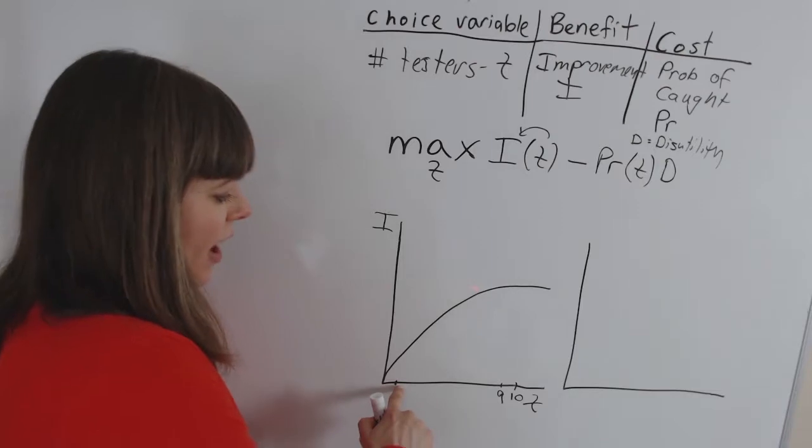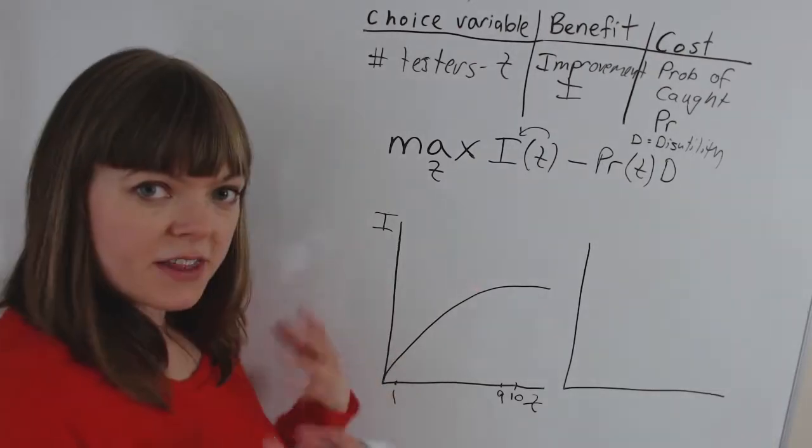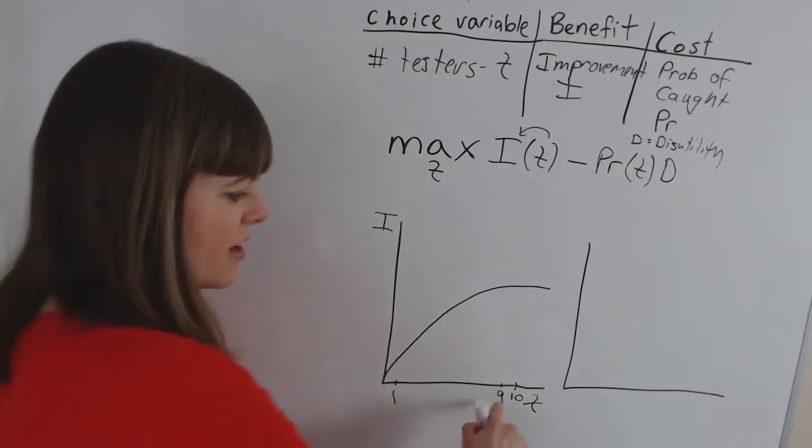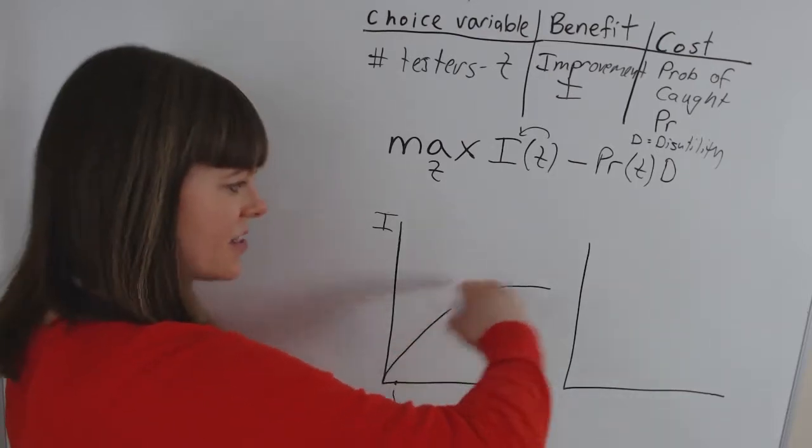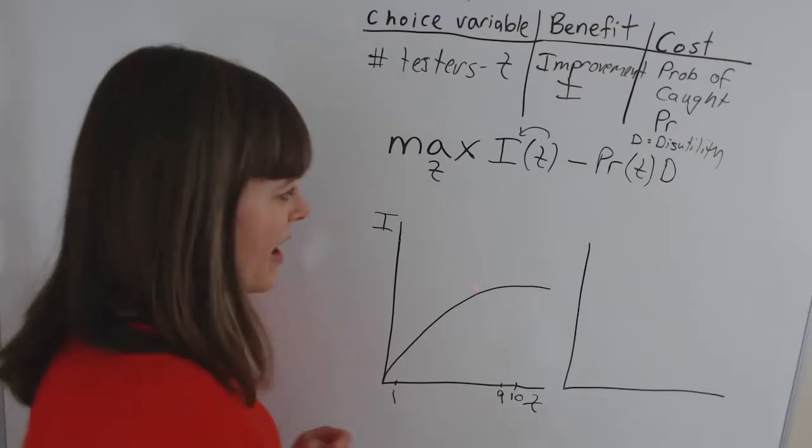So that first person has a very high improvement in the product because we gain a lot of information. The tenth person, the marginal benefit for them is small so we have a classic diminishing marginal cost structure.